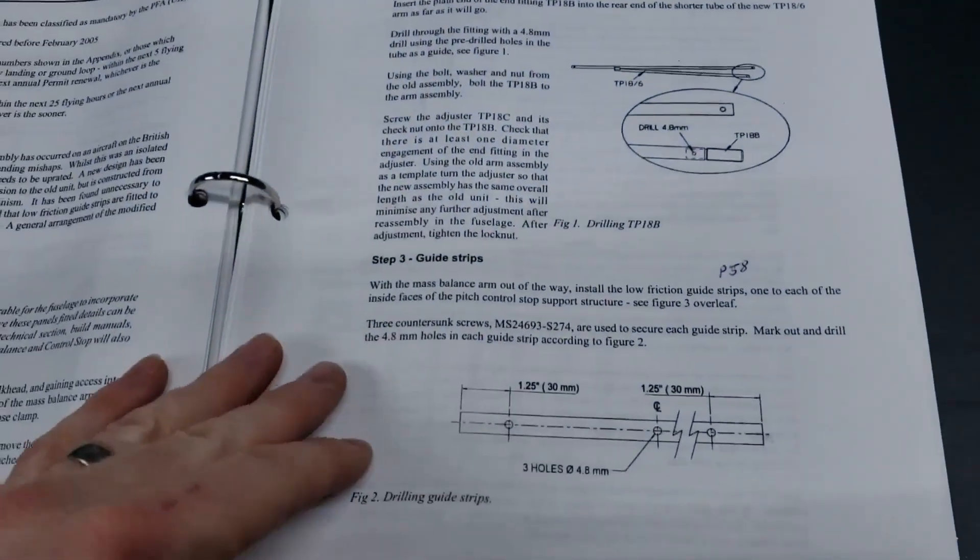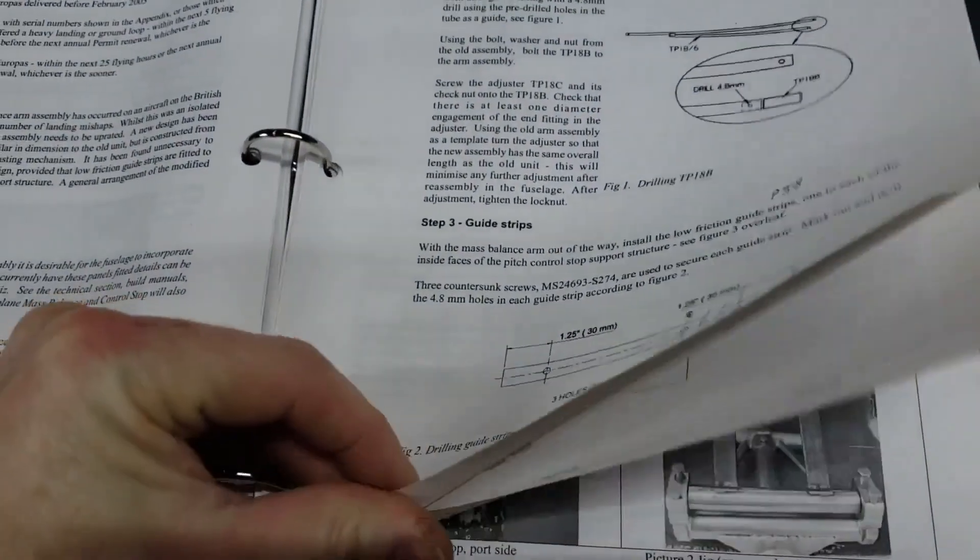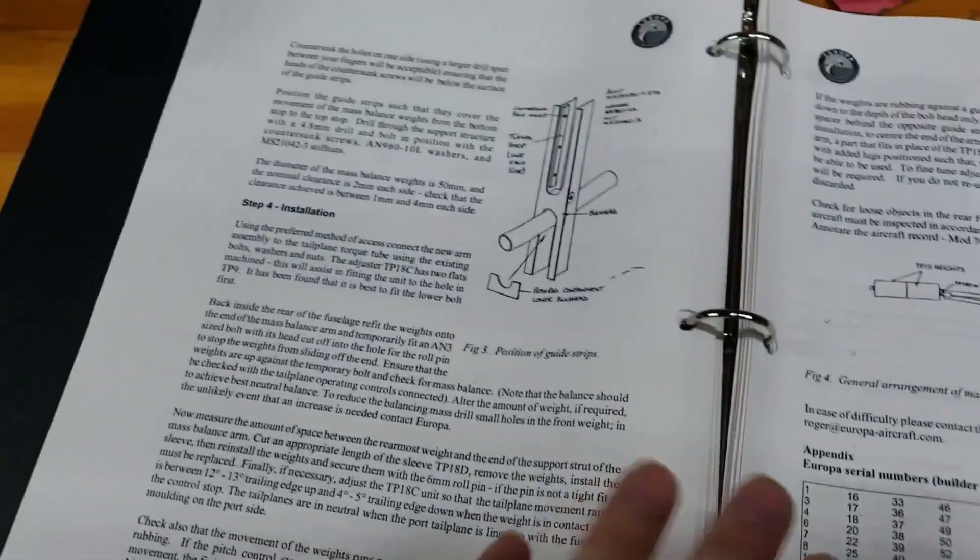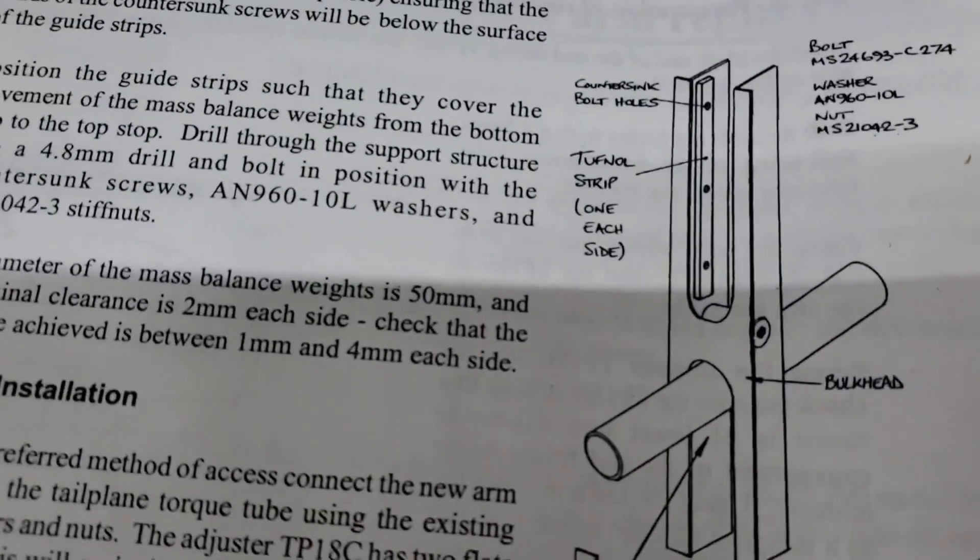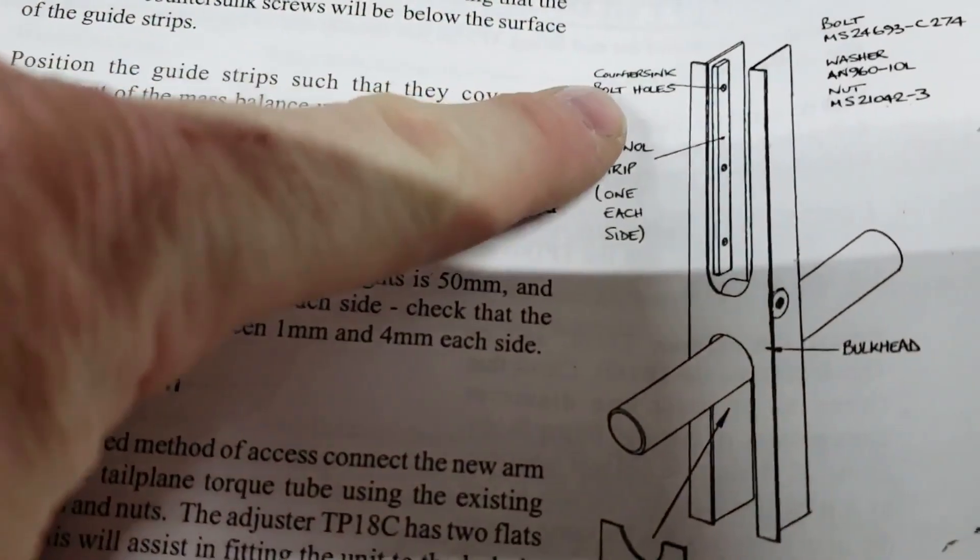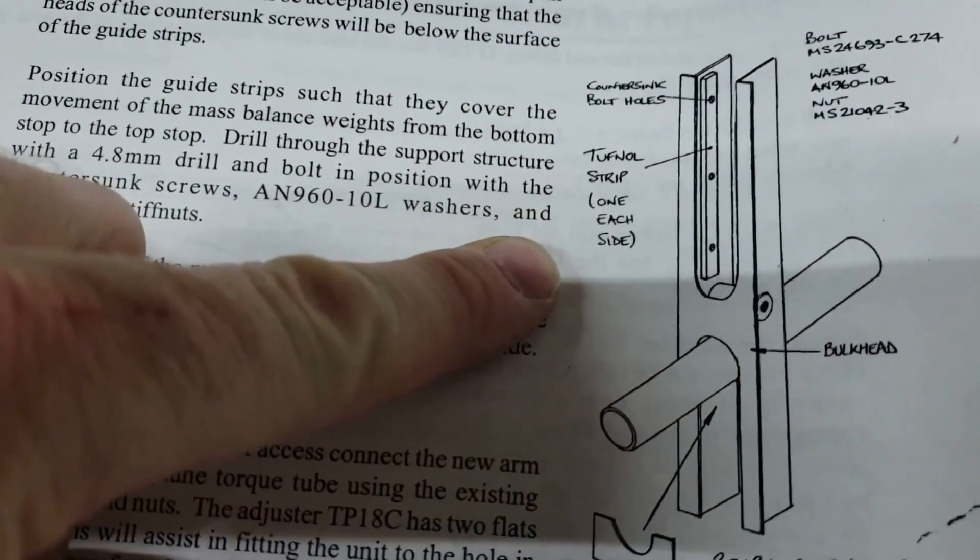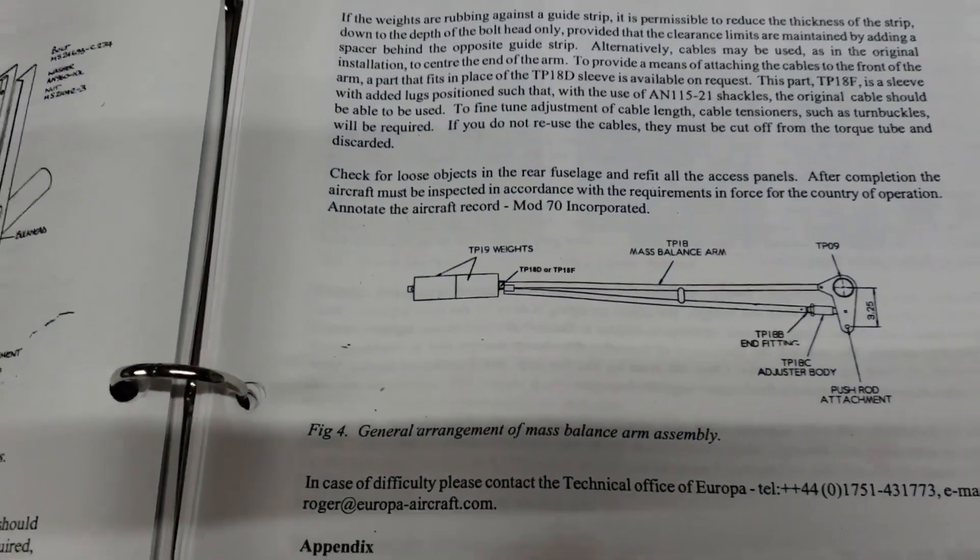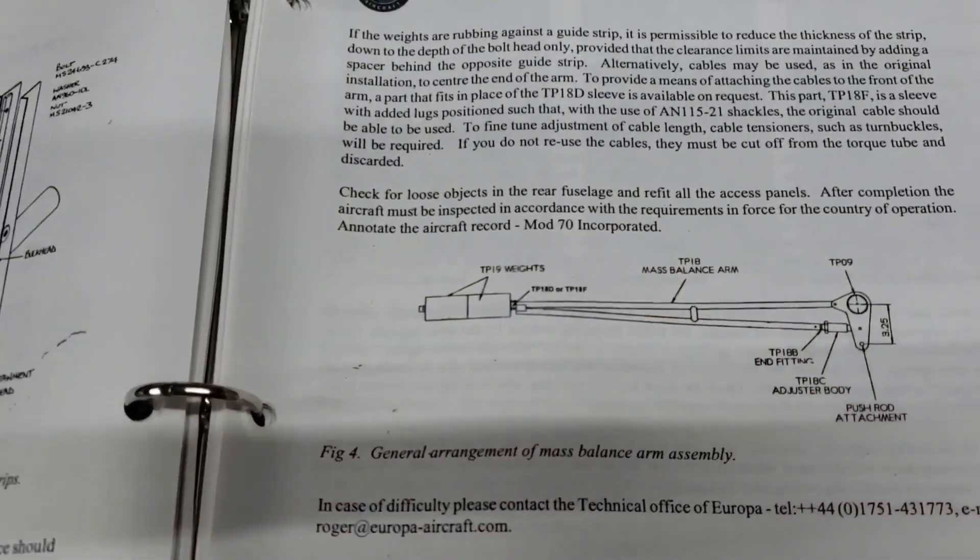It's just enough to keep that from oscillating. So these are the plans for it. It's called Mod 70. And as you can see, they go in that tall U-shaped area here. And they keep that weight from going back and forth. That's a side profile view of the mass balance arm.